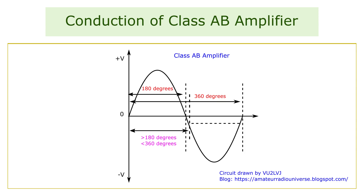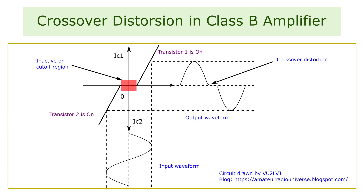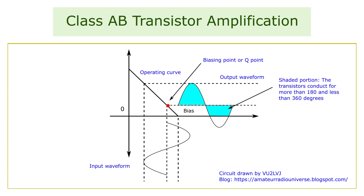It has good distortionless amplification as well as high DC to AC conversion efficiency. The forward voltage drop at the p-n junction of 0.7 volts at the transistor base is reduced by biasing the transistors accordingly. Thus the transistors will conduct for more than 50 percent or 180 degrees of the input cycle. It minimizes the problem of crossover distortion that affects the class B operation. The biasing is done using a voltage divider network or a series connected diode arrangement.